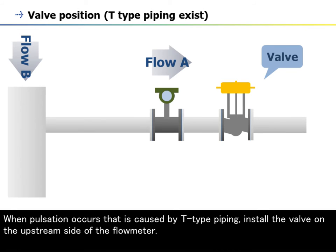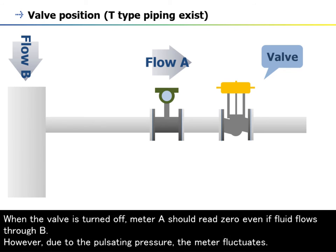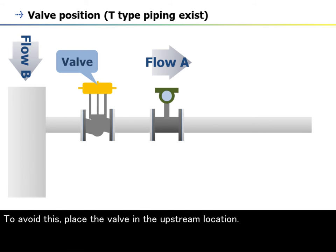When pulsation occurs that is caused by T-type piping, install the valve on the upstream side of the flow meter. When the valve is turned off, meter A should read zero even if fluid flows through B. However, due to the pulsating pressure, the meter fluctuates. To avoid this, place the valve in the upstream location.